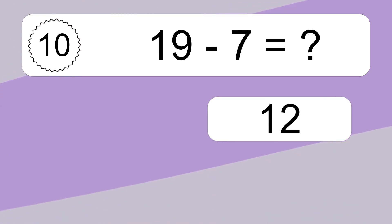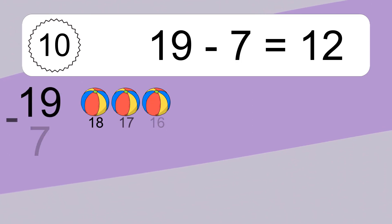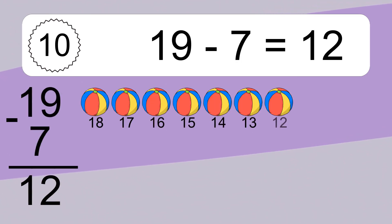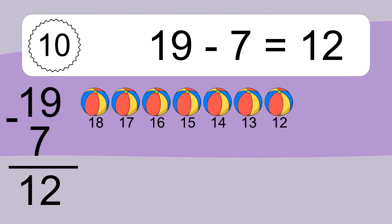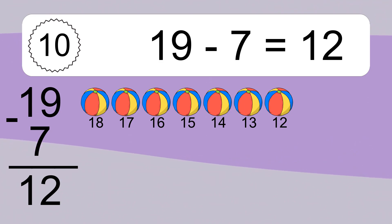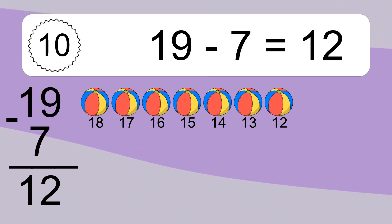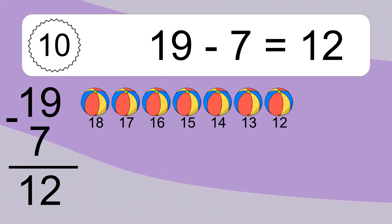19 minus 7 equals what? 19 minus 7 equals 12. Let's count it: 18, 17, 16, 15, 14, 13, 12.